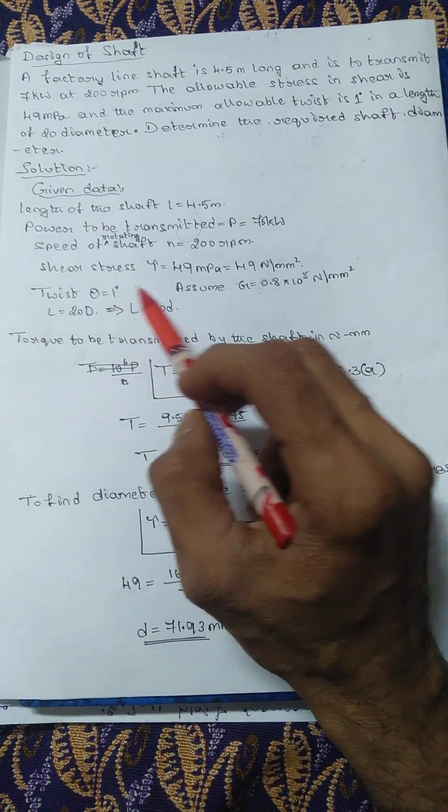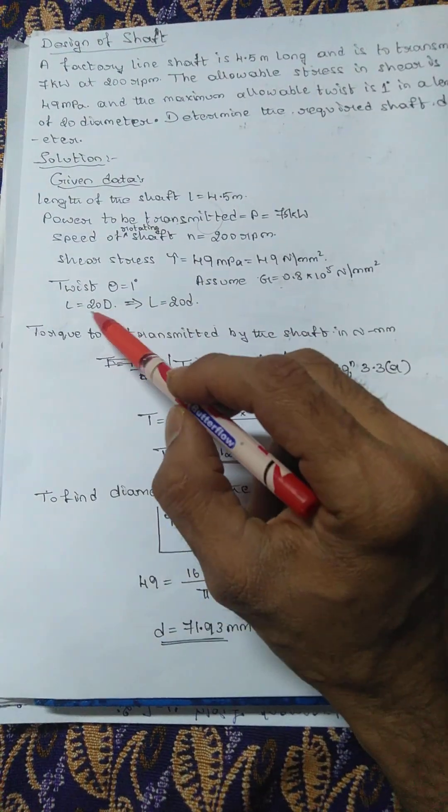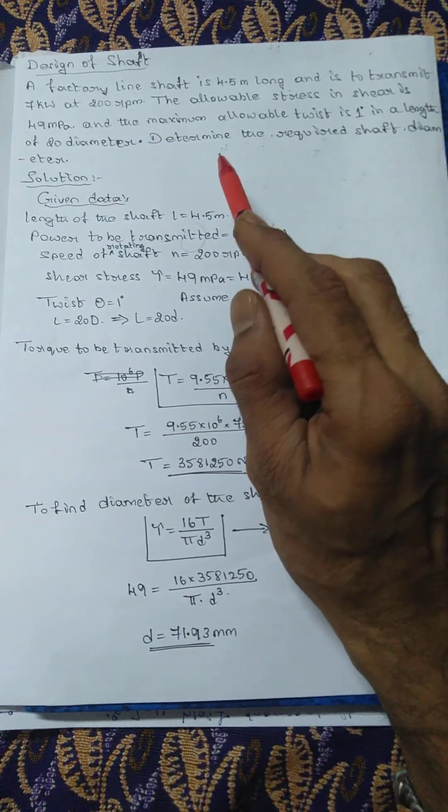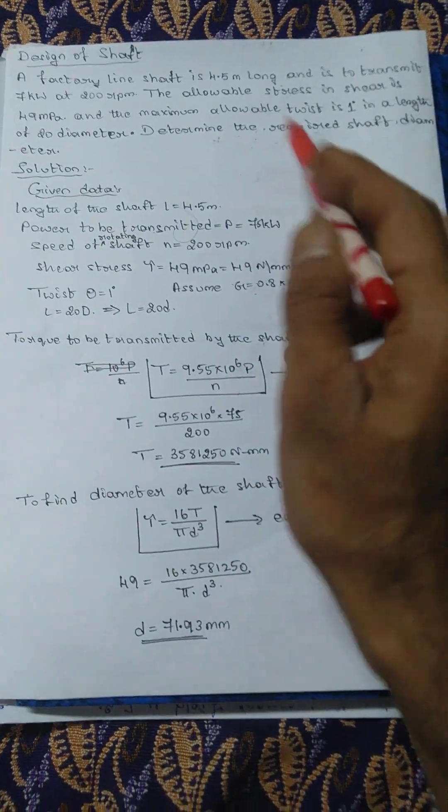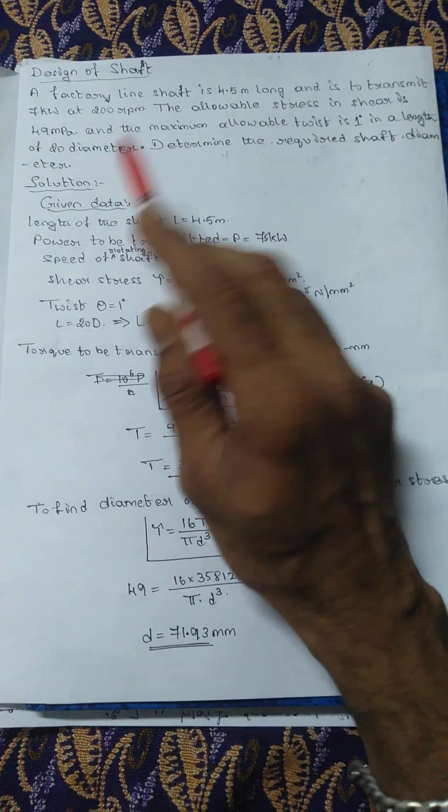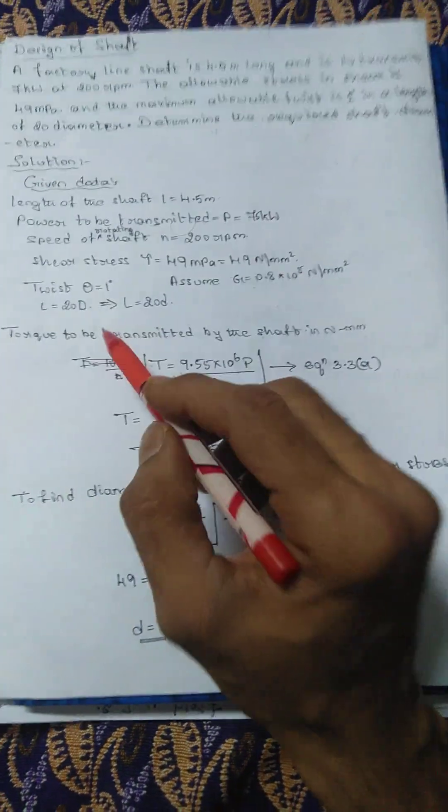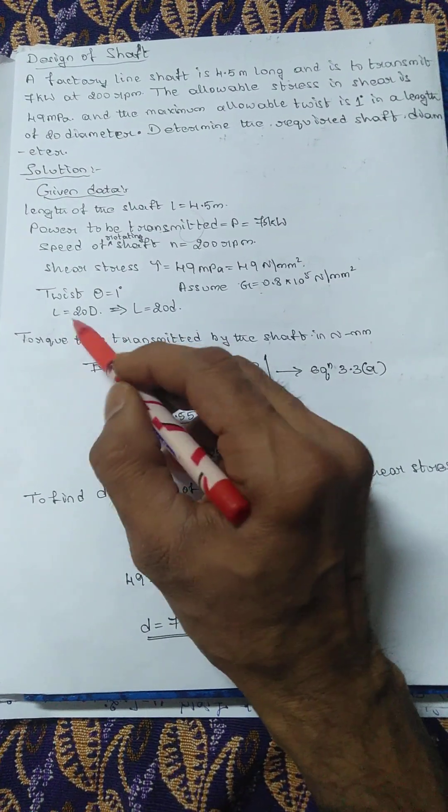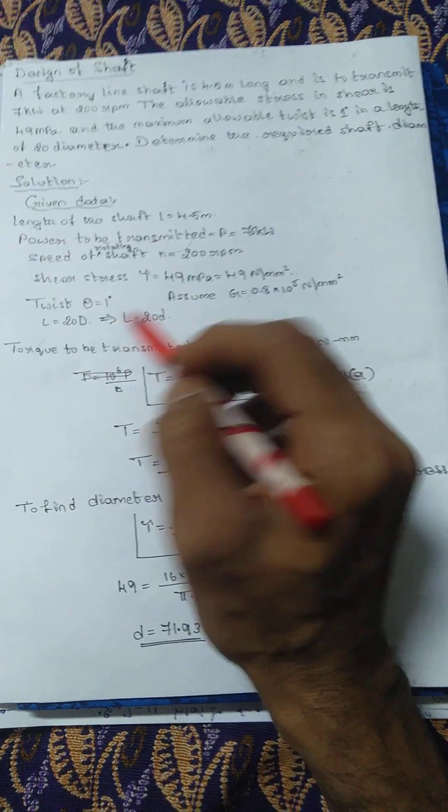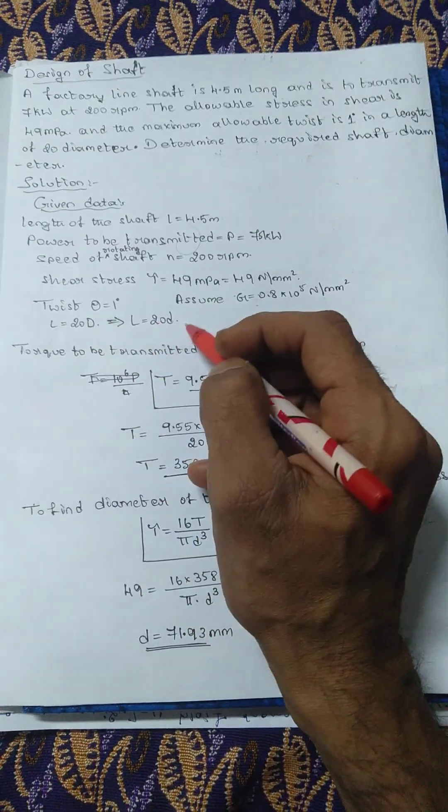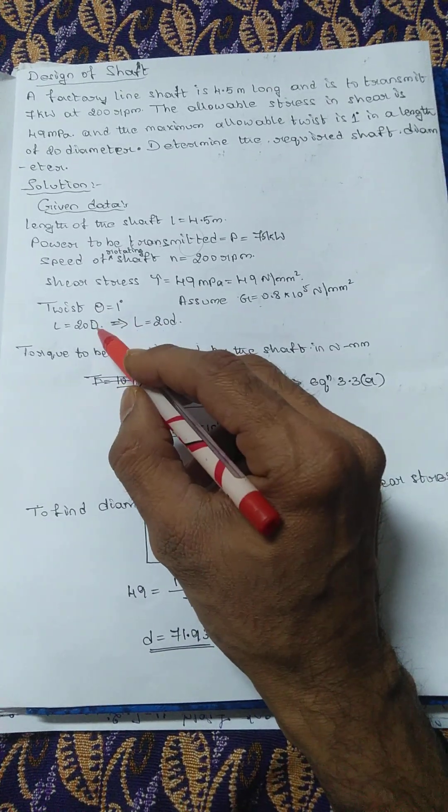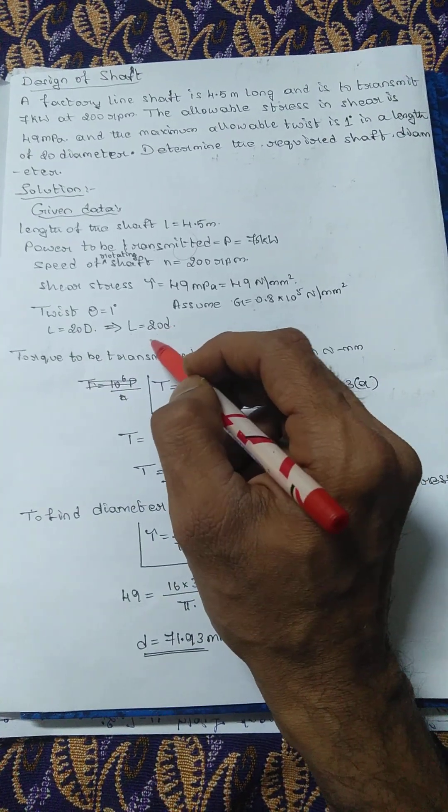Next, L is equal to 20D. They have given that is length of 20 diameters. The meaning is L equals 20d, or 20D if capital diameter of the shaft is considered as capital D. In the data handbook small d is used.